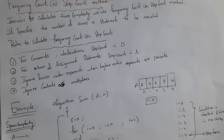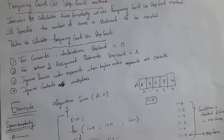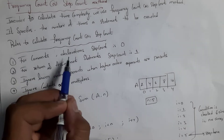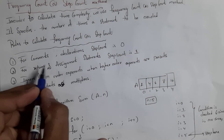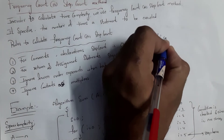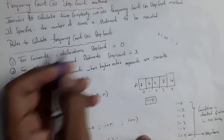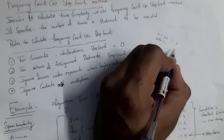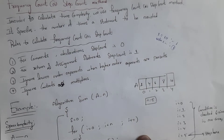There are some rules which we need to follow in order to calculate the frequency count of an algorithm. The first rule is: for comments and declarations, step count is zero. Comments and declarations are optional, they are not mandatory, so step count is zero. For return and assignment statements, step count is one. For example, x equal to 10 is an assignment statement — step count is one. For return x — step count is also one.